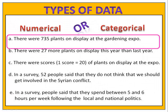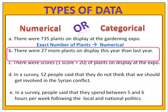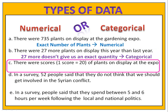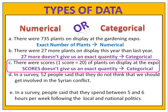In our first example, we have 735 plants on display at the gardening expo — this is numerical data. There were 27 more plants on display this year than last year: 27 more doesn't give me an exact quantity, so this is categorical. There were scores of plants on display at the expo — one score equals 20, but we're told just scores, so we don't know how many there were, and this is categorical.